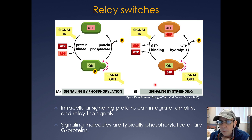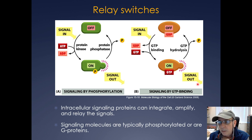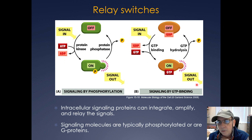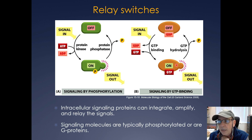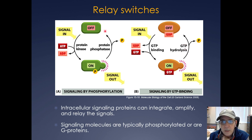The second relay switch is signaling by GTP binding. A small G-protein in its inactive state is bound to GDP. The signal comes in, GDP is exchanged for GTP, and the signal goes out. Recalling from lecture three, RAS has a switch loop or switch helix — when bound to GDP, there's a conformational change. The GTP is then hydrolyzed back to GDP, returning to the resting state. These two relay switches — phosphorylation and GTP binding — are very important to know and understand.